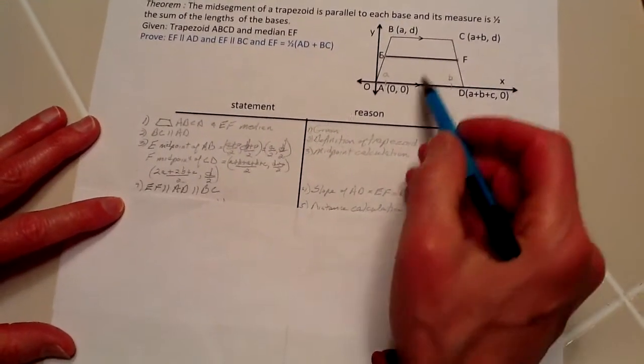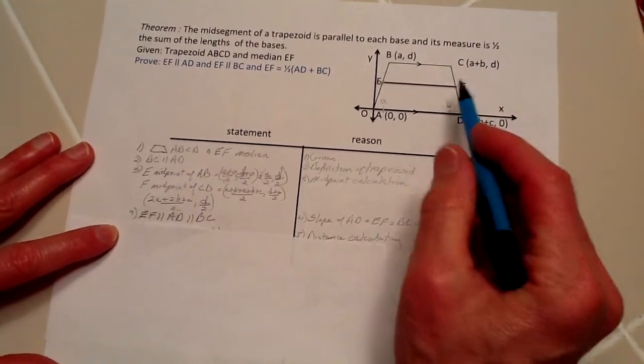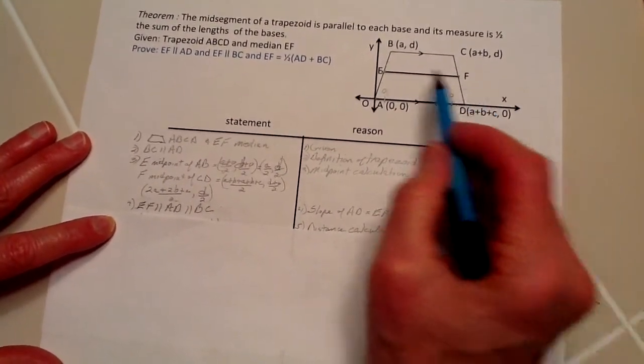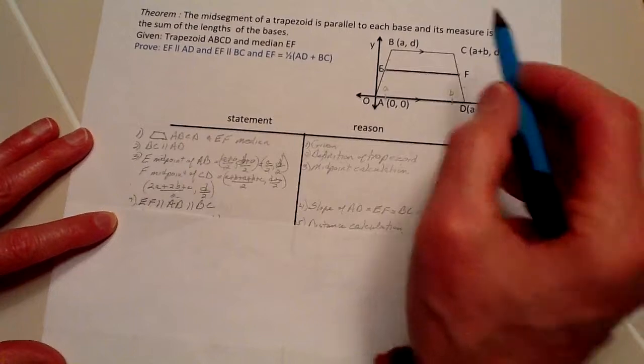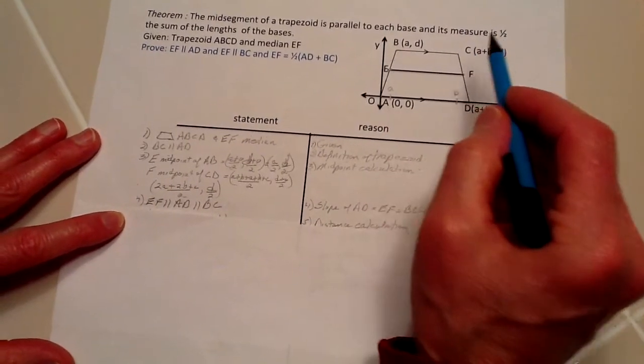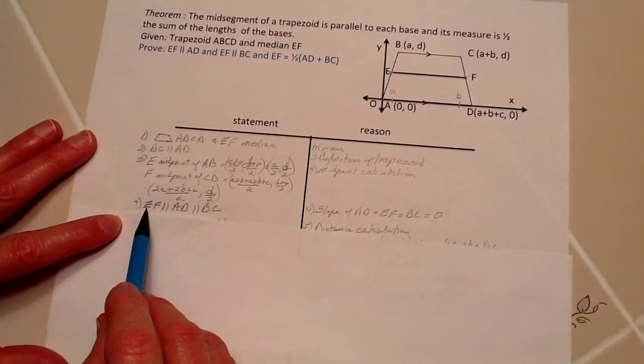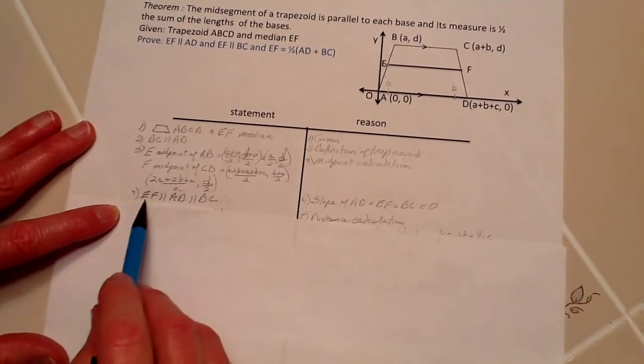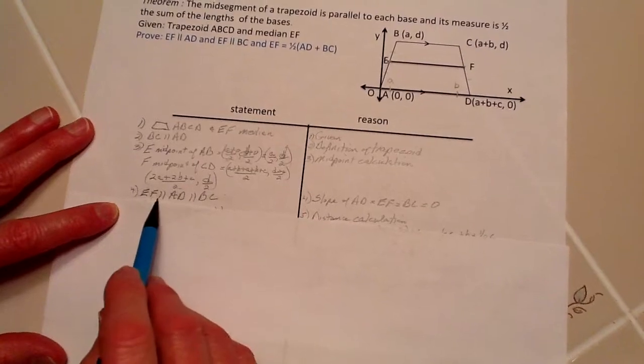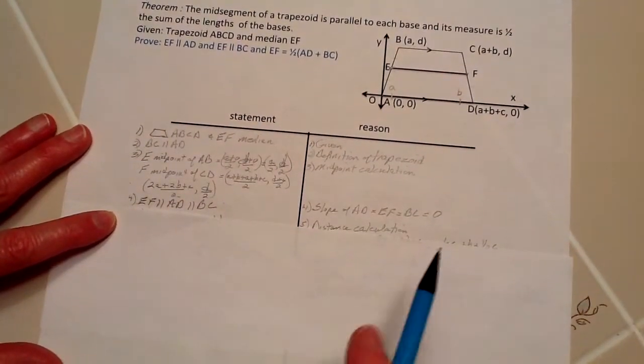Next, we know that line AD has a slope of 0, EF has a slope of 0, and BC has a slope of 0. Therefore, these lines are parallel because parallel lines have equal slopes, and these are all equal to 0.